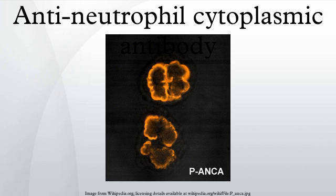Classical PANCA occurs with antibodies directed to MPO. PANCA without nuclear extension occurs with antibodies to BPI, cathepsin G, elastase, lactoferrin, and lysozyme. GSANA are antibodies directed to granulocyte-specific nuclear antigens.